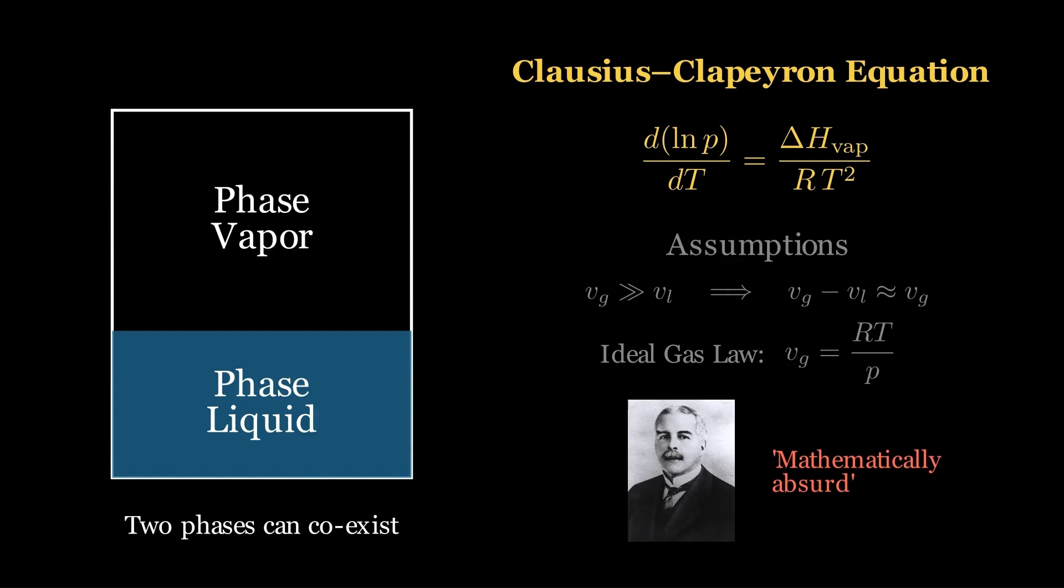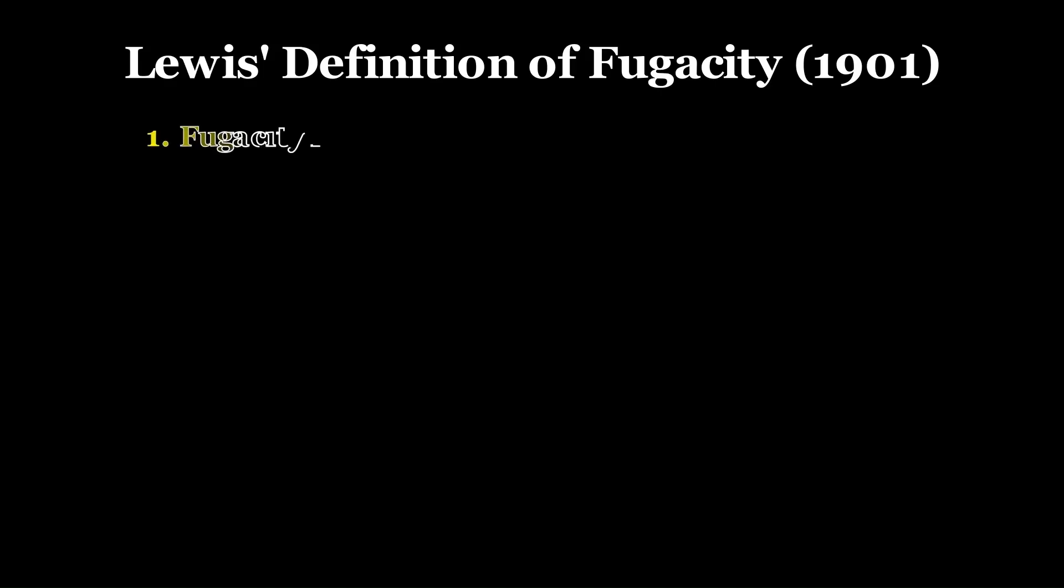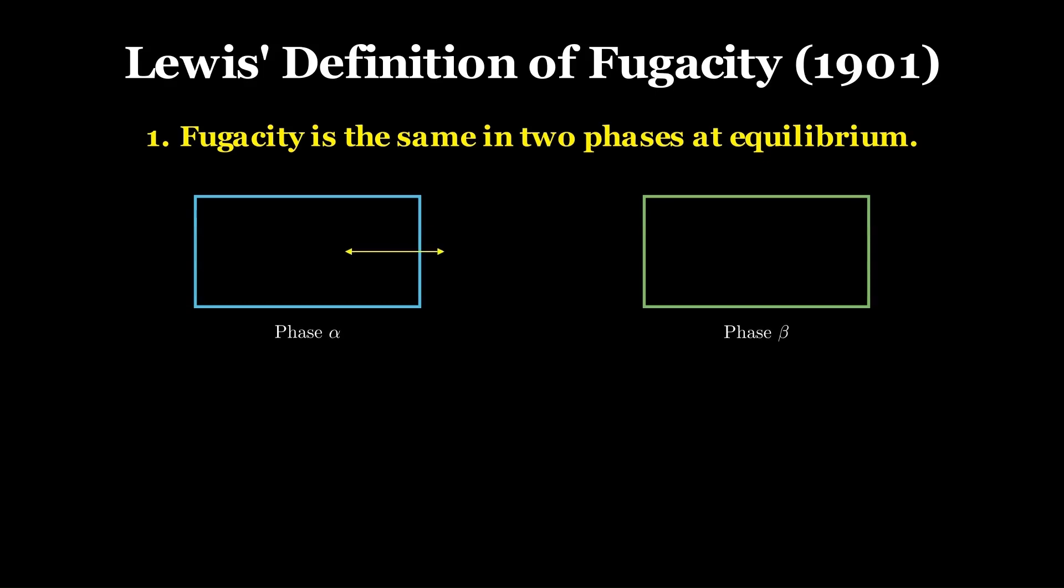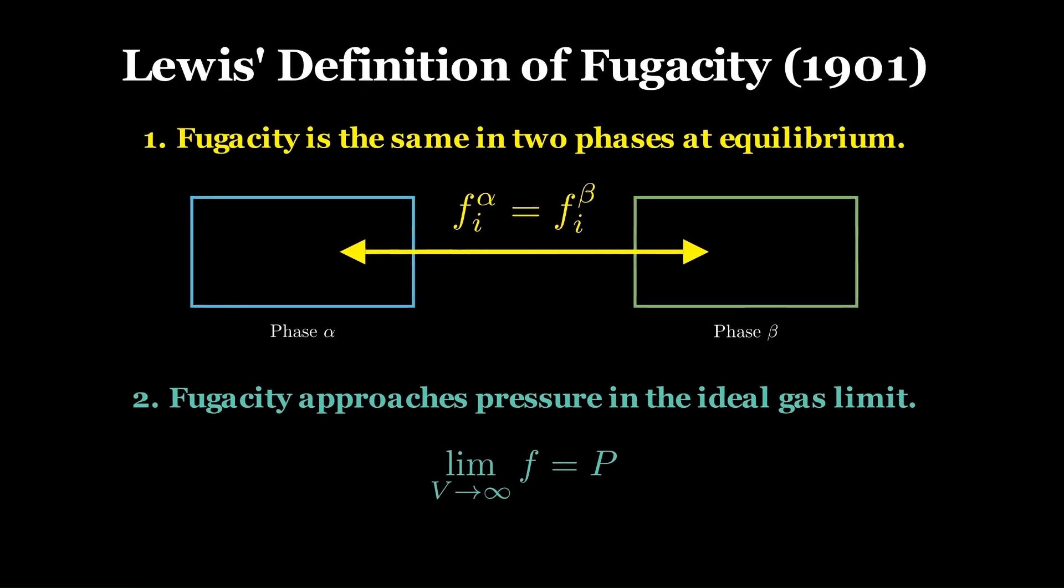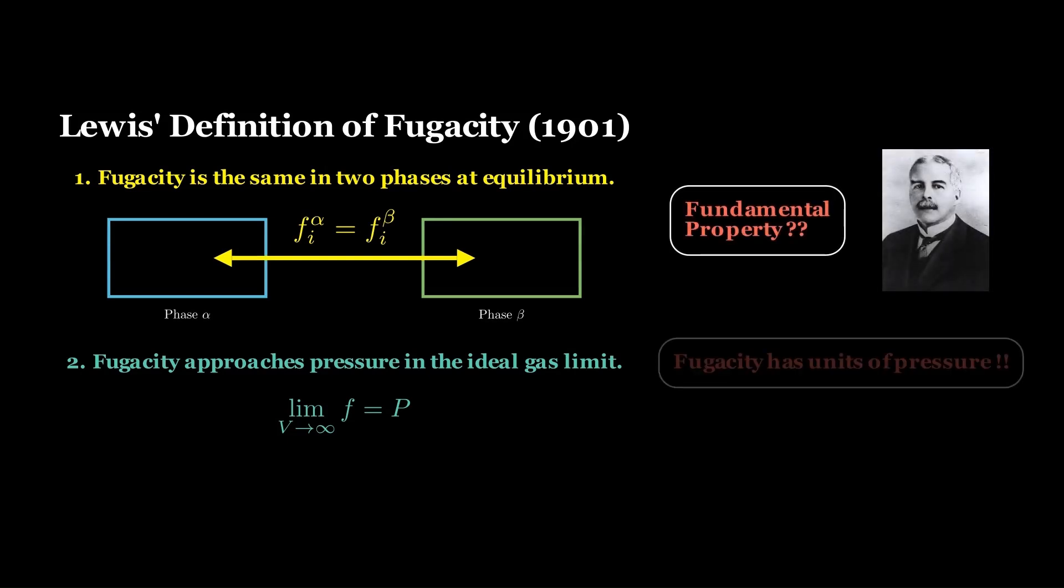That's why he introduced a new term to account for real gas behavior, but try to preserve the current form of ideal gas equations. In 1901, Lewis introduced fugacity and defined it with two conditions. First, it must have the same value for a species in any two phases at equilibrium. Second, in the ideal gas limit, when volume becomes very large and intermolecular interactions vanish, fugacity approaches the actual pressure.